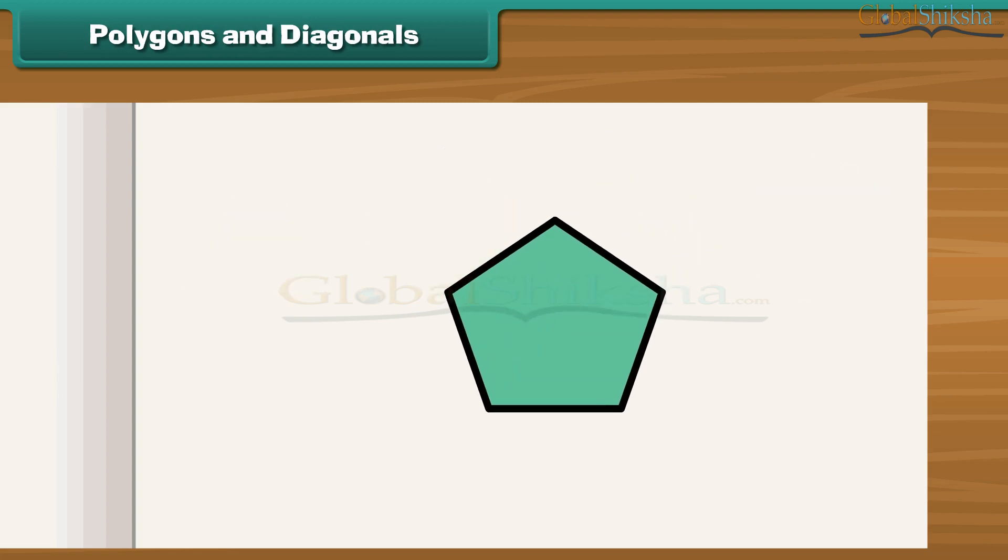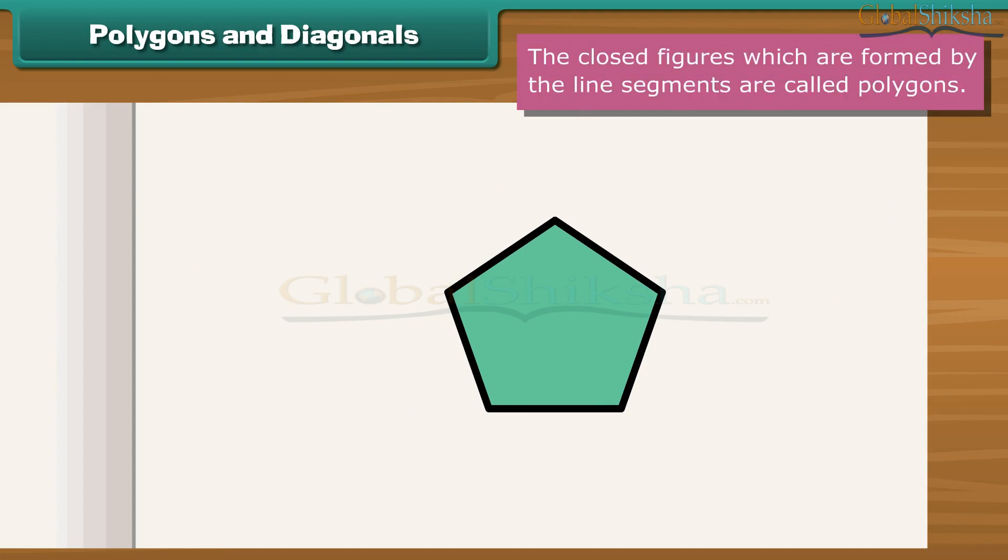Look at these closed figures. These are formed by line segments. The closed figures which are formed by line segments are called polygons. The line segment of a polygon is called its side. The point where two line segments meet is called its vertex.